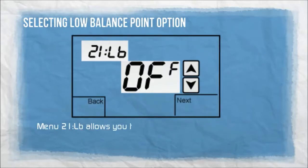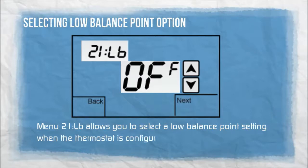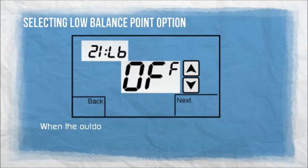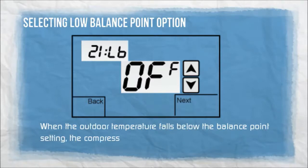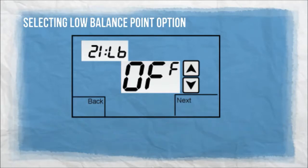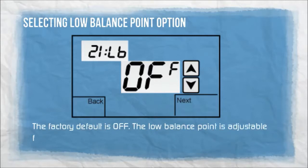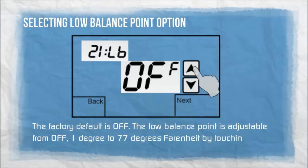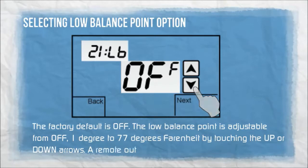Menu 21LB allows you to select a low balance point setting when the thermostat is configured for heat pump or fossil fuel. When the outdoor temperature falls below the balance point setting, the compressor is locked out and only auxiliary heat or fossil fuel is used for heating. The factory default is OFF. The low balance point is adjustable from OFF, 1 degree to 77 degrees Fahrenheit. A remote outdoor sensor must be installed.